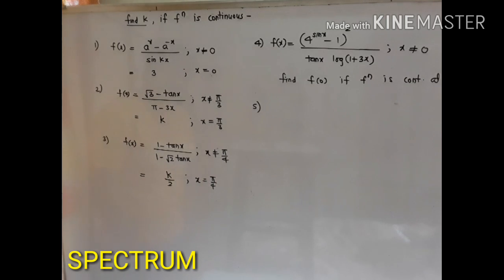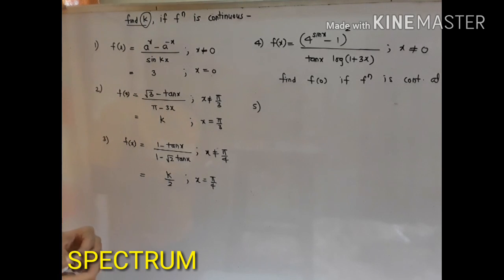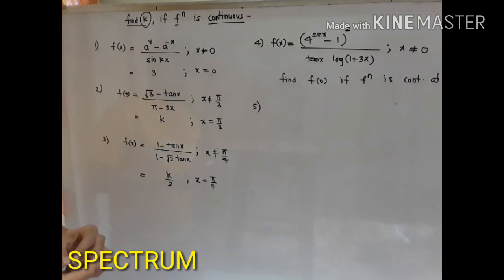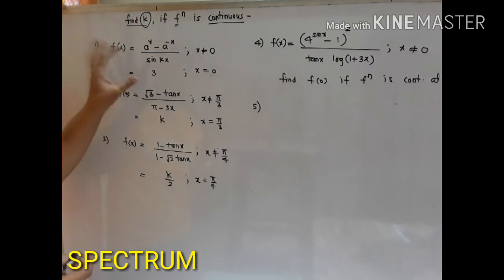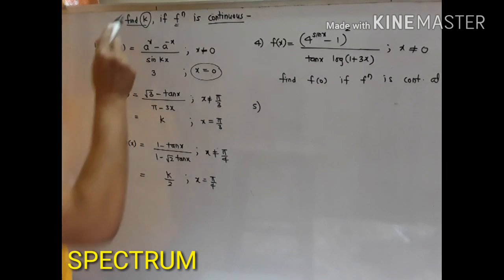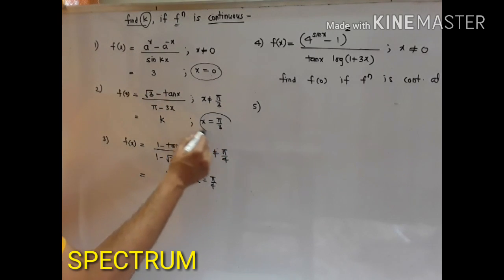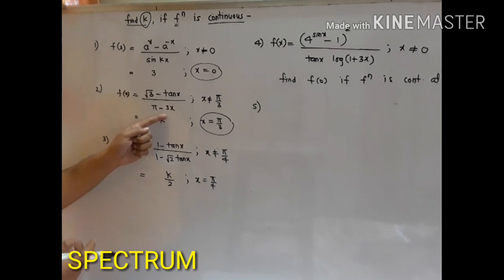The next type of question is where they ask you to find the value of some unknown, for example k, when the function is given to be continuous. For example, this particular function is continuous at x equal to 0 and they are asking us to find k. Similarly, this function is continuous at x equal to pi by 3 and they are asking us to get the value of k.